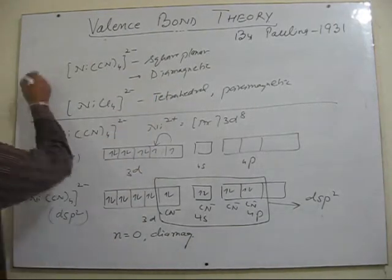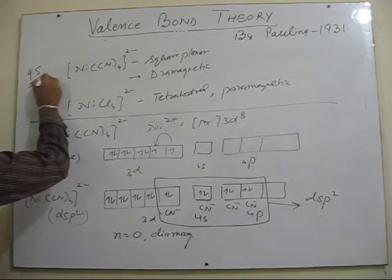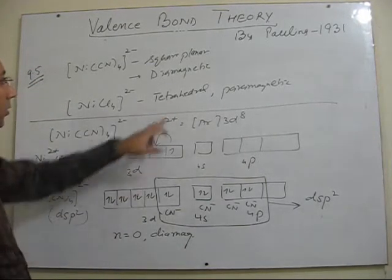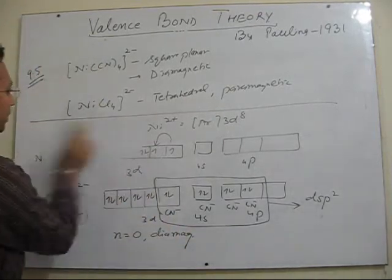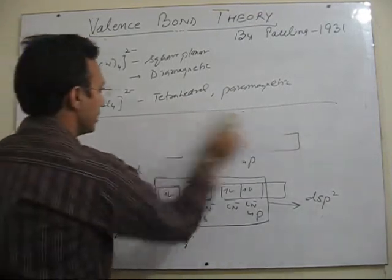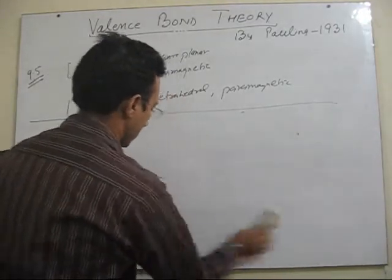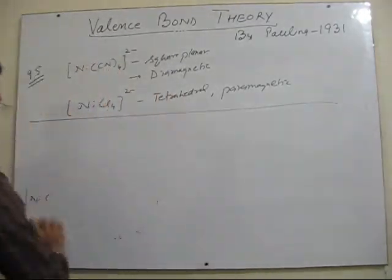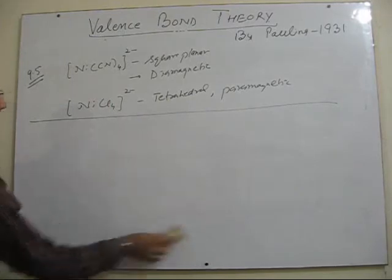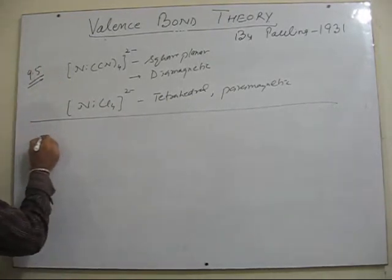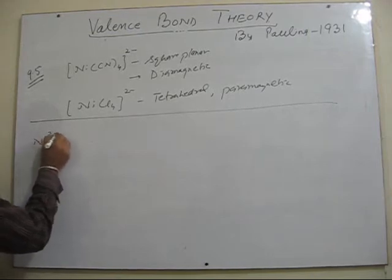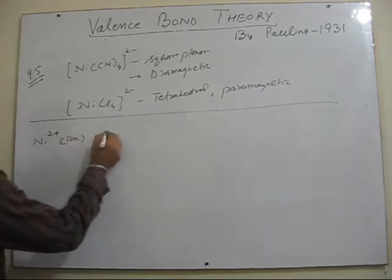This is index problem 9.5 NCERT. So let's explain the second case here, that complex of nickel in which cyanide is the ligand. Sorry, chloride ion is the ligand and that complex is tetrahedral as well as paramagnetic.